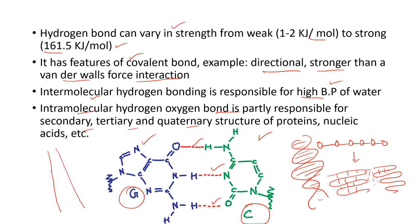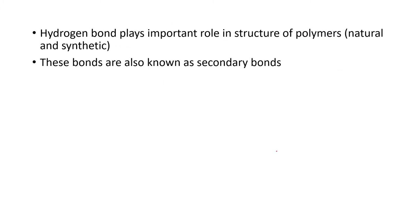The nitrogen bases join the two strands of DNA together. Hydrogen bonds also play a major role in the structure of polymers. Poly means many — many subunits form a polymer. Individual units are monomers, and many monomers joined together form a polymer. These polymers may be natural or synthetic, and hydrogen bonds in them are also known as secondary bonds.